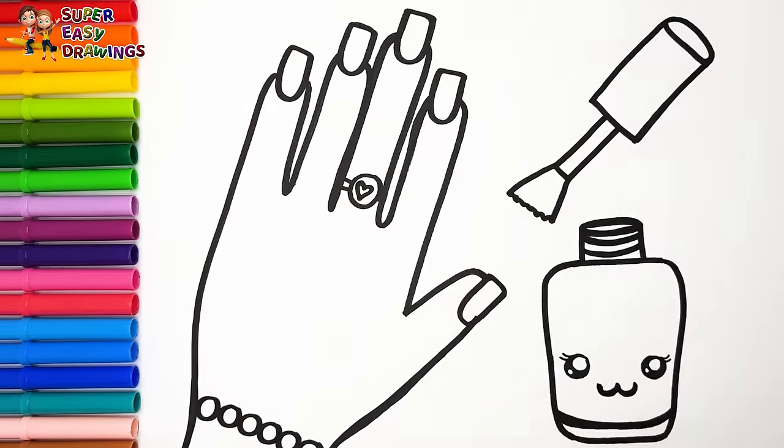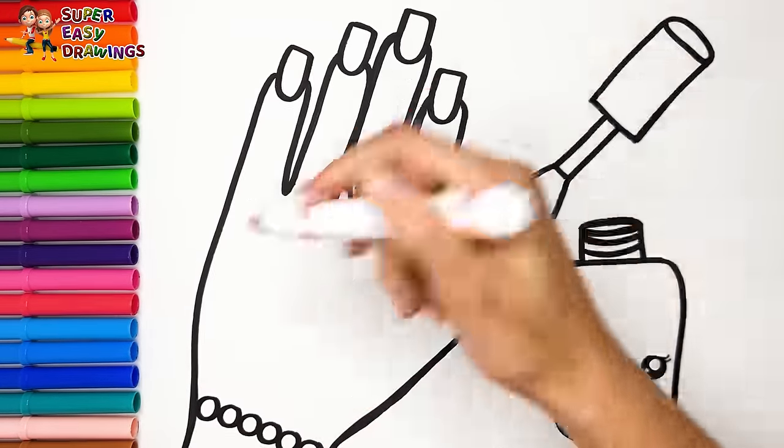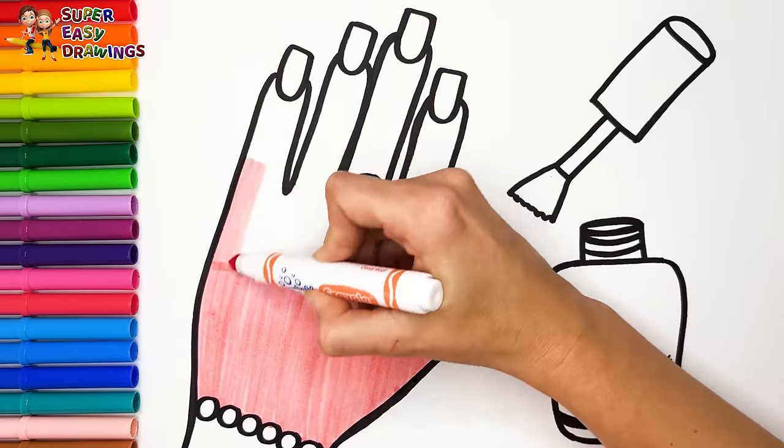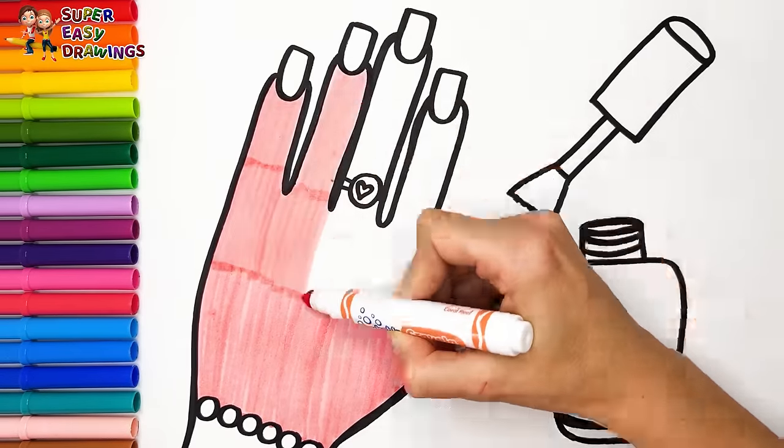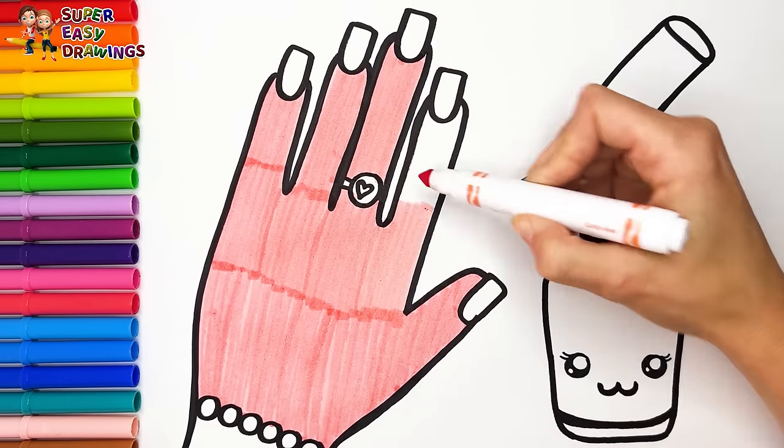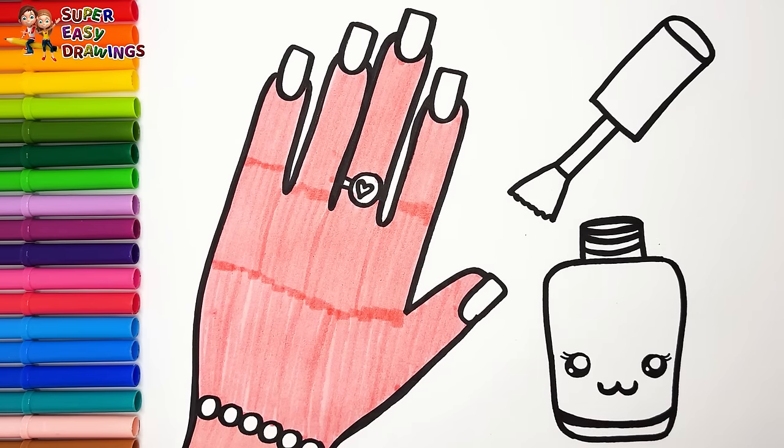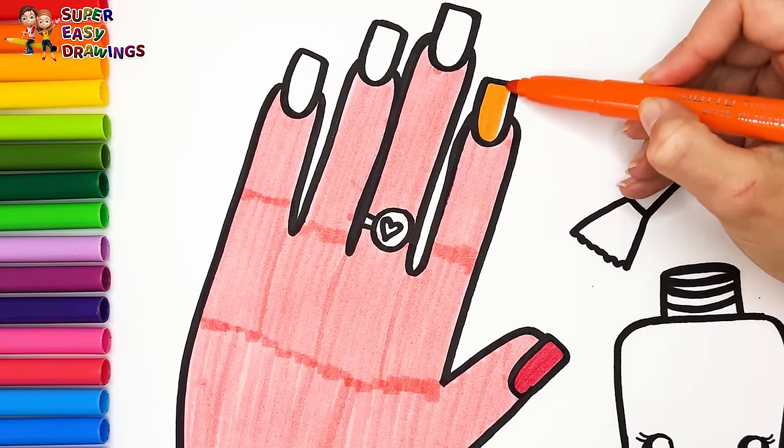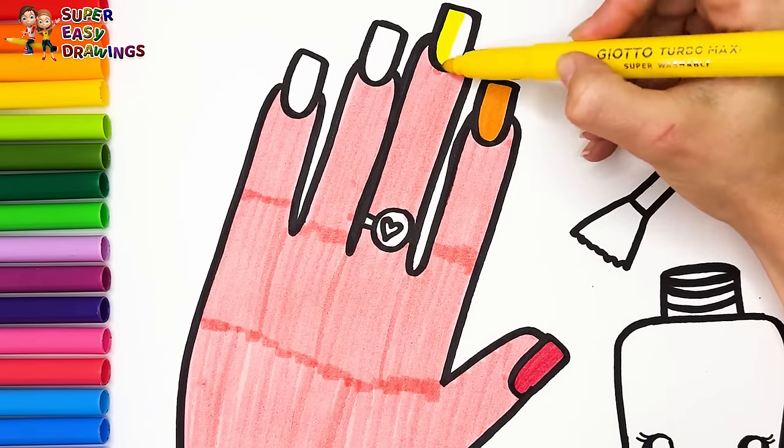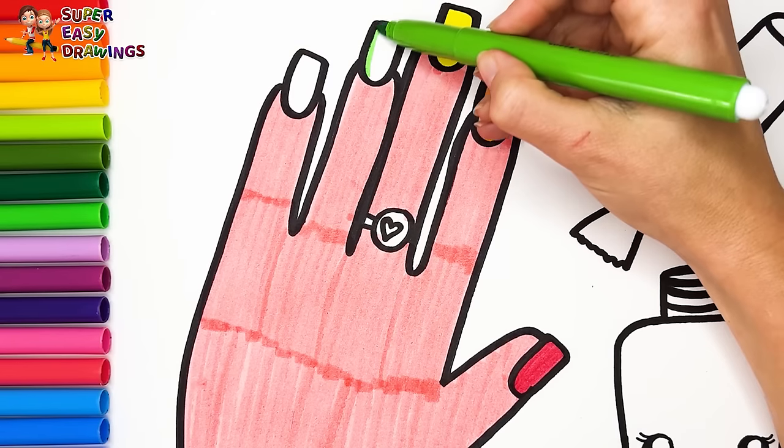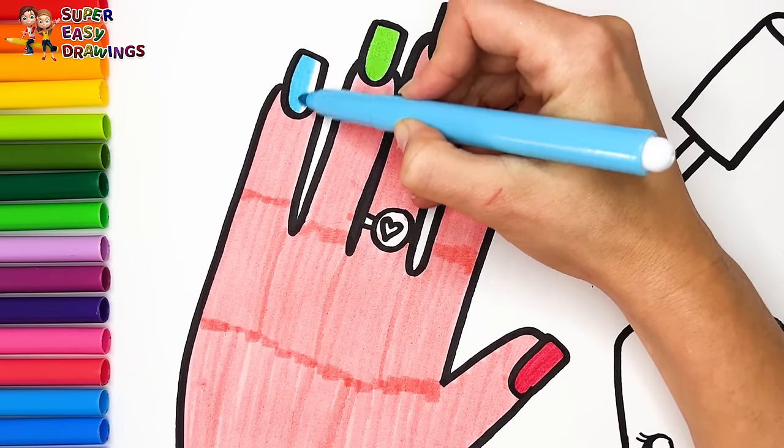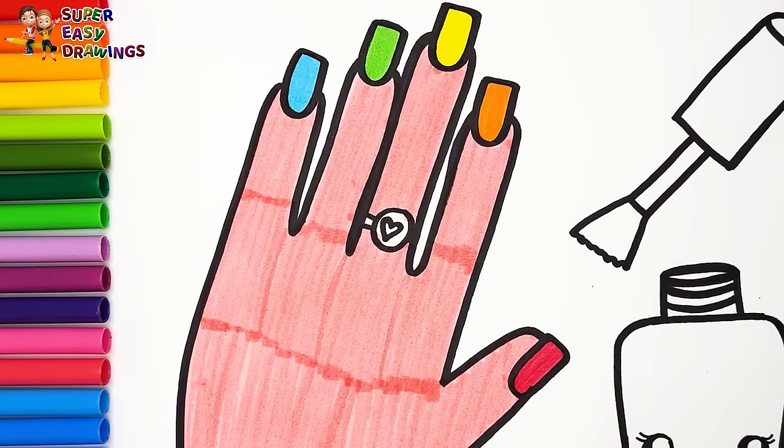Let's start coloring. I color the skin with this light cream marker. For the thumb, red. For the index finger, orange. For the middle finger, yellow. I paint the nail of the ring finger with green. And finally the little finger, blue. Purple.